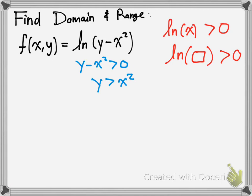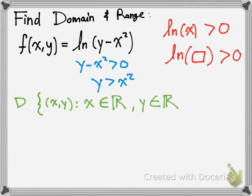The different part is the way you write it. The domain is equal to the set of all points for x, y with x as a real number and y as a real number, such that y is greater than x squared. And that's how you state the domain.